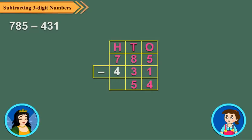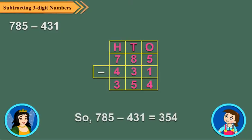And finally subtract the hundreds digits. 7 hundreds minus 4 hundreds is equal to 3 hundreds. It's really very easy. Now I will jump to subtraction of 3-Digit Numbers with regrouping. Wait Neha. Before doing these sums, you will have to learn how to regroup tens to ones and hundreds to tens. You already know how to regroup tens to ones.